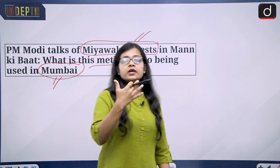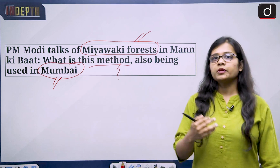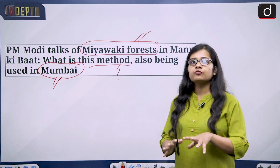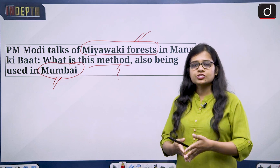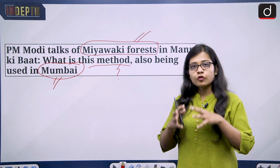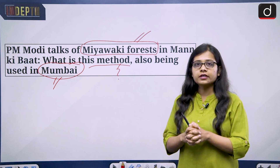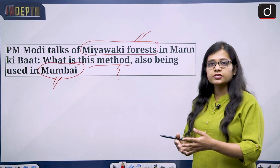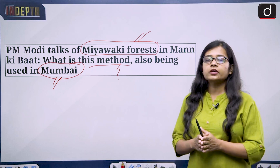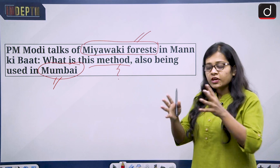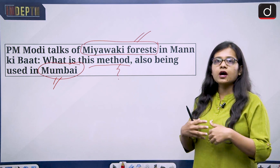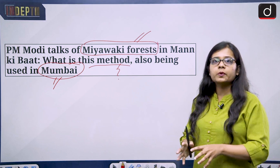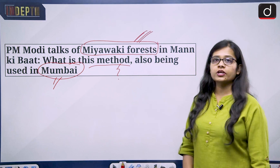Mumbai is one of the most populous cities of India. Metropolitan cities like Mumbai, Delhi, Kolkata, Chennai, Hyderabad, and Bengaluru face the problem that because of rapid urbanization, industrialization, and population increase, green cover and surrounding forest are being cleared. What is needed is a technique by which, in a very small area of land, we can develop a forest that gives maximum productivity while utilizing minimum space.